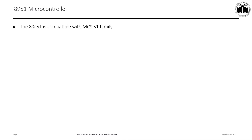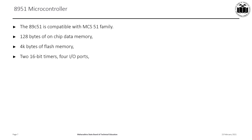The 8951 microcontroller is compatible with the MCS-51 family. It has 128 bytes of on-chip data memory and 4 kilobytes of flash memory. Also, it has two 16-bit timers and 4 I/O ports. There are 5 vector interrupts and an on-chip oscillator as well as a serial port. Except for the 4 kilobytes of flash memory, the other features are the same as in the case of the 8051 microcontroller.